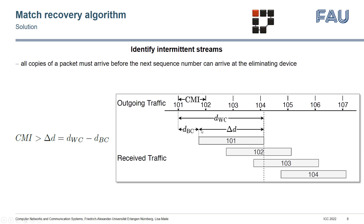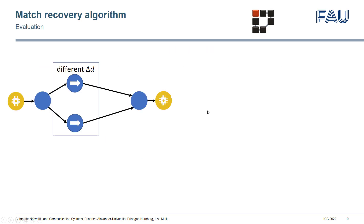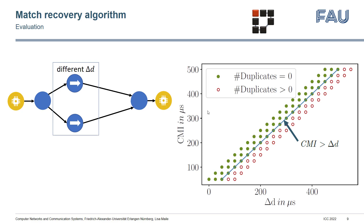We used the simulation framework OMNeT++ and extended the NeSTiNg library to include FRER. To verify our equations, we set up a network for which we could change the path delays, resulting in different delta d values, then configured the simulation to use the match recovery algorithm. Configurations for which CMI is bigger than delta d are above the blue line — here, all duplicates were safely identified. All configurations below the line accepted at least one duplicate packet, illustrating that our boundary defines the optimal setting.